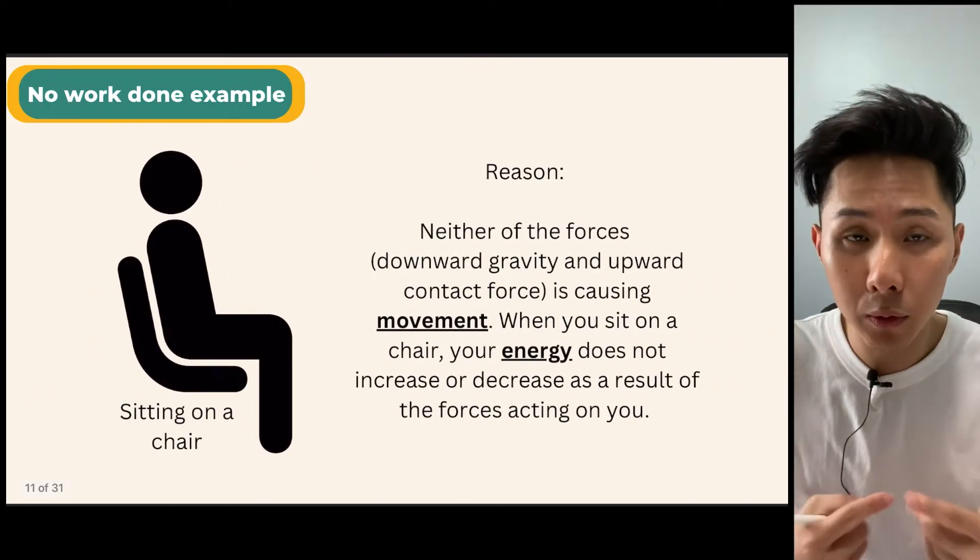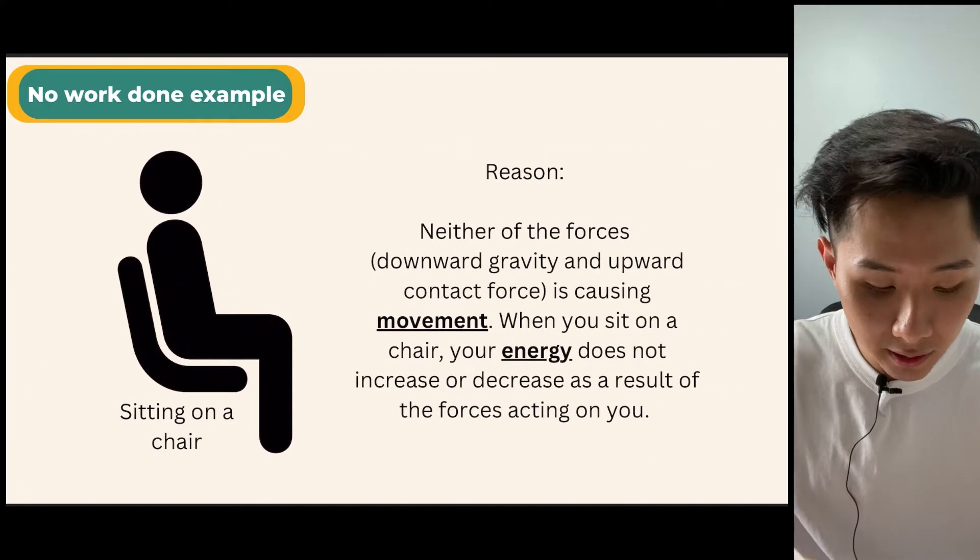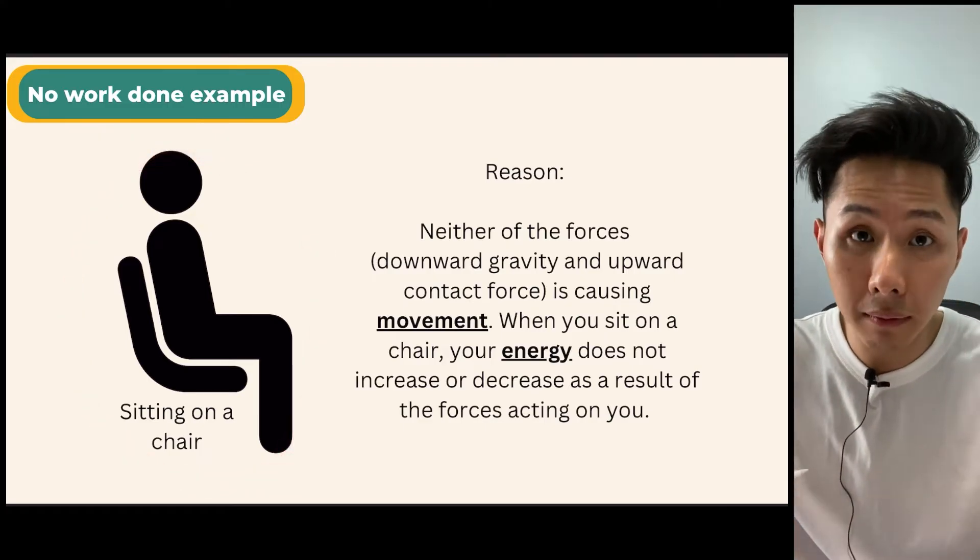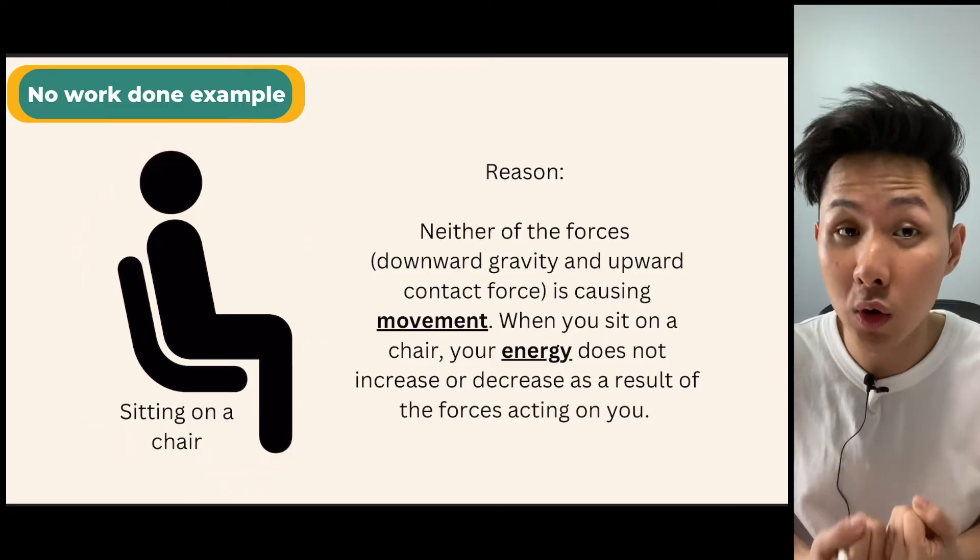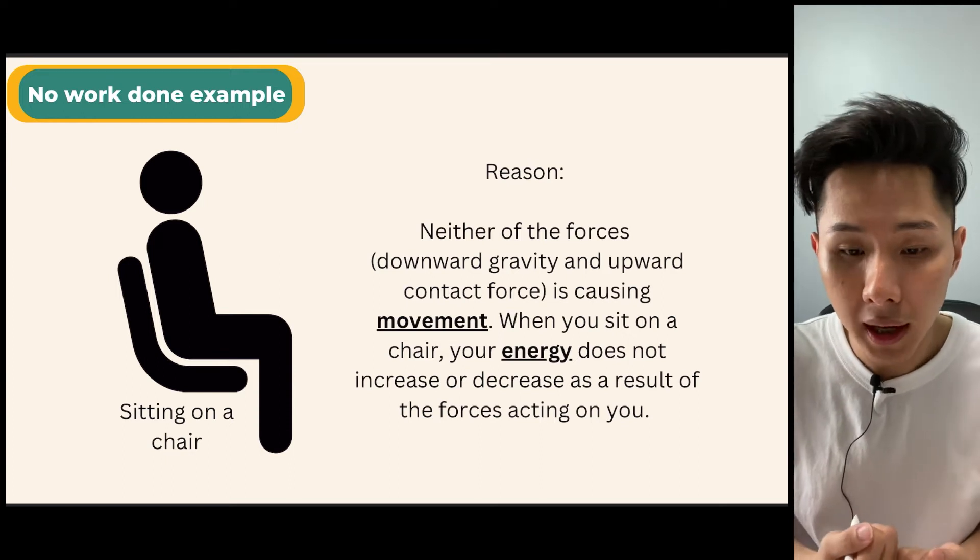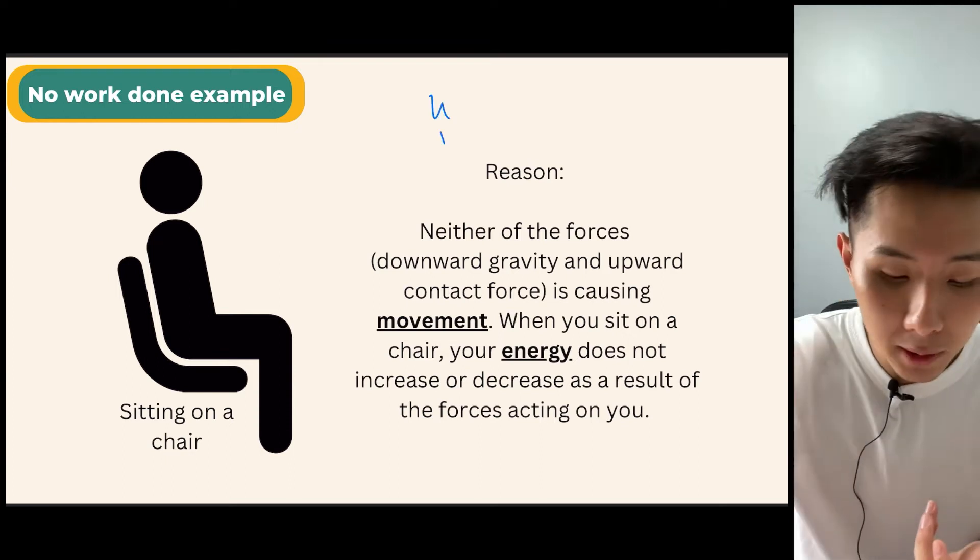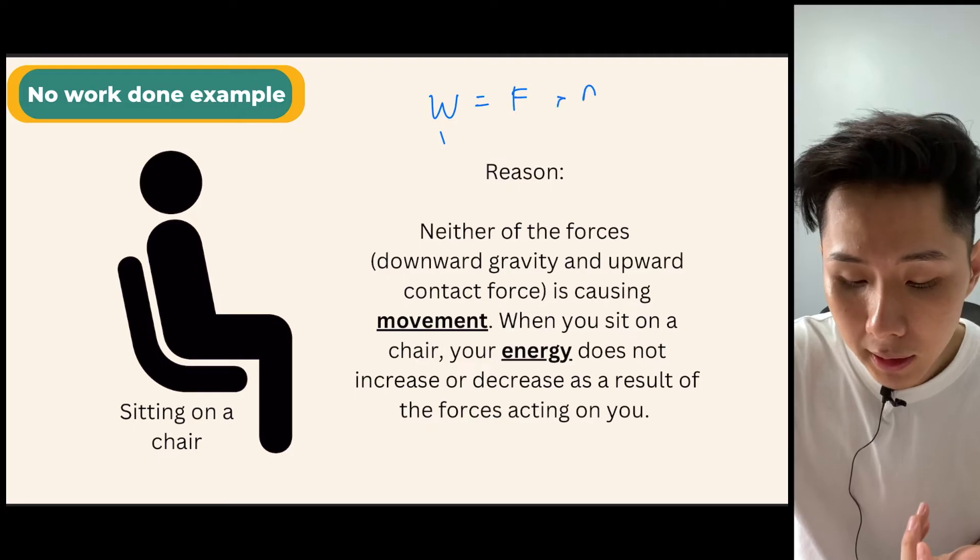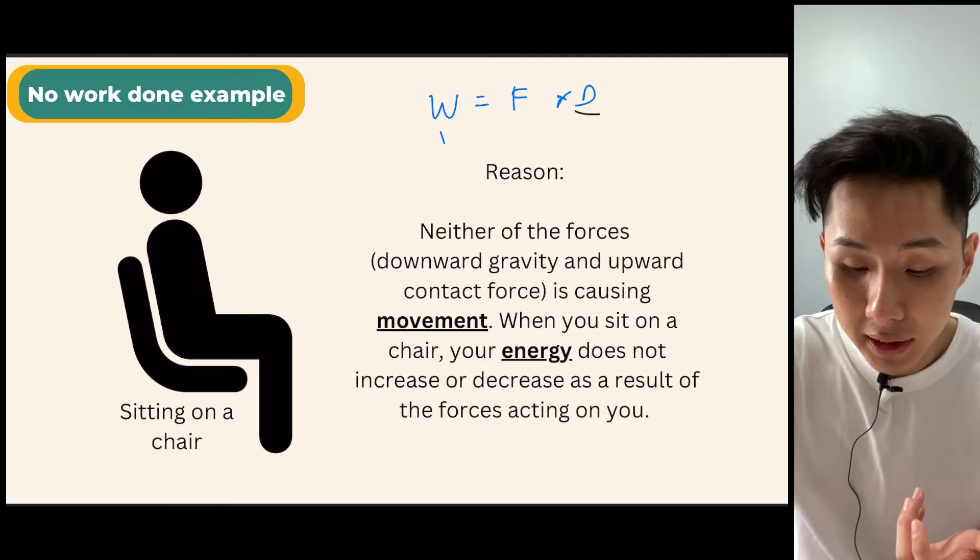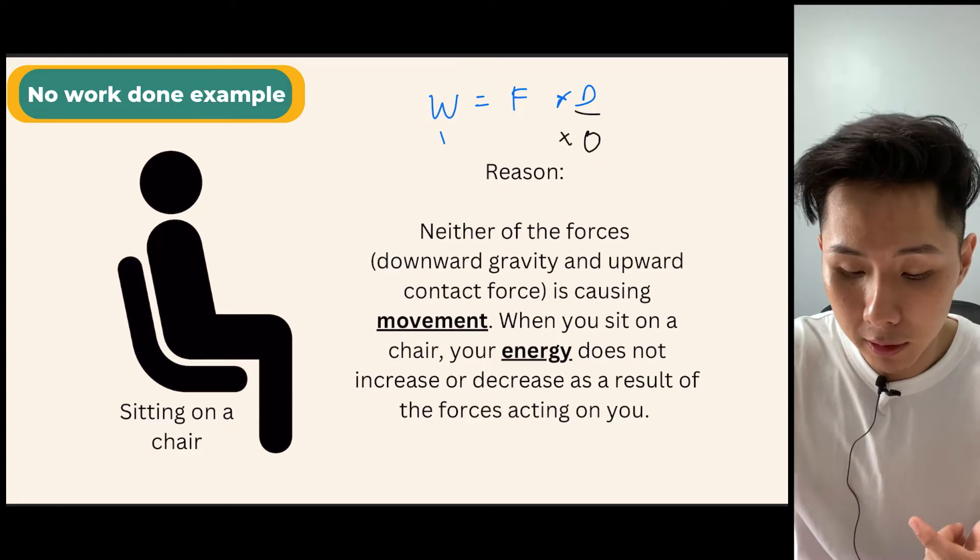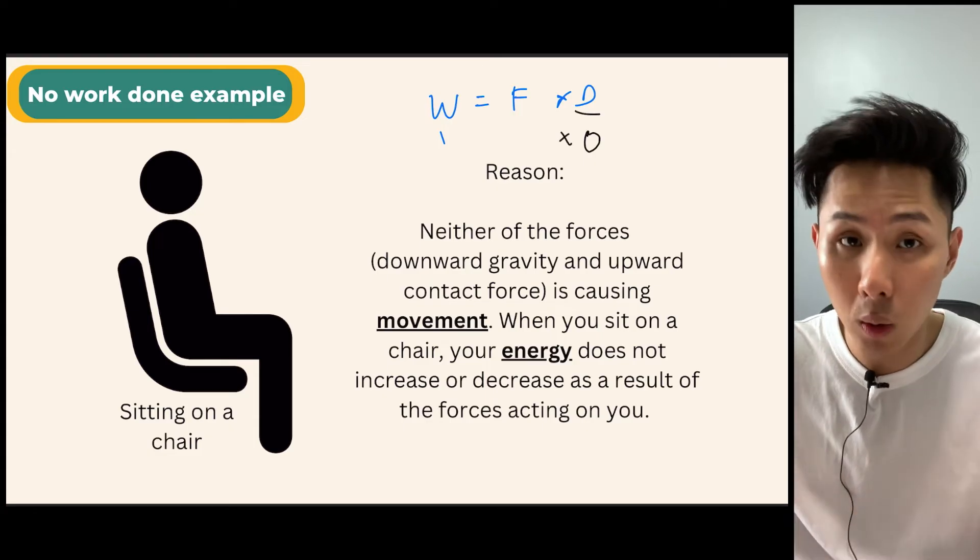And let me give you two examples of when no work is done. First of all, it's when you are sitting. Even though the force of gravity is acting on you, they should pull you down. But because you're not moving, the distance, remember the formula is W equal to F times D. You're not moving. Therefore, D will be zero here. And whatever things that you multiply by zero, you get zero. Therefore, no work is done.